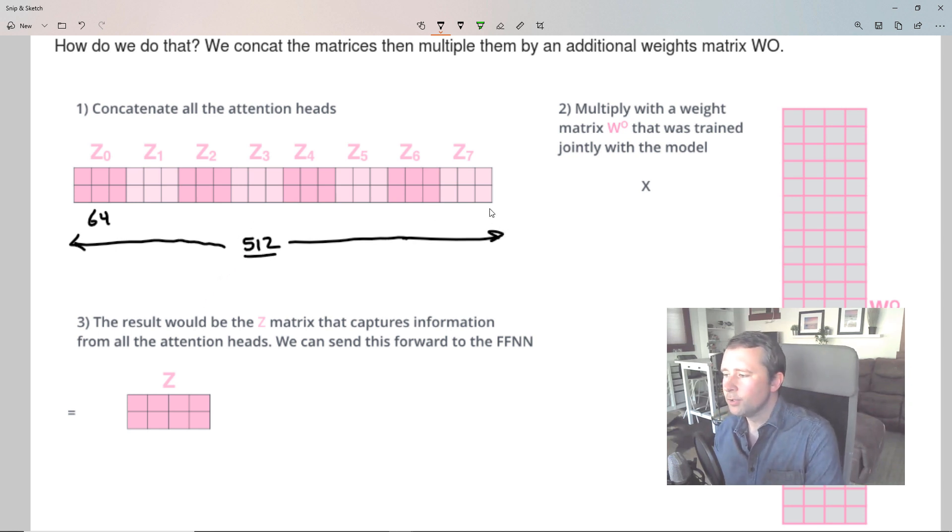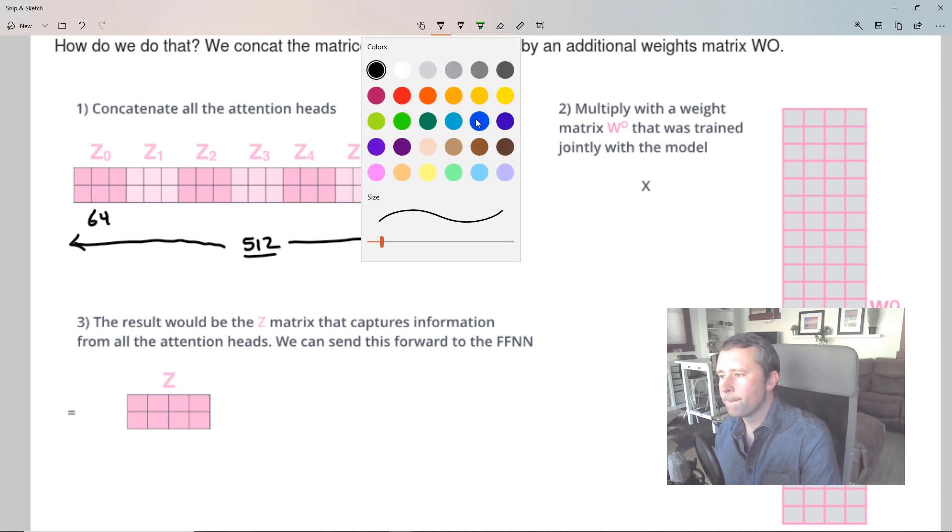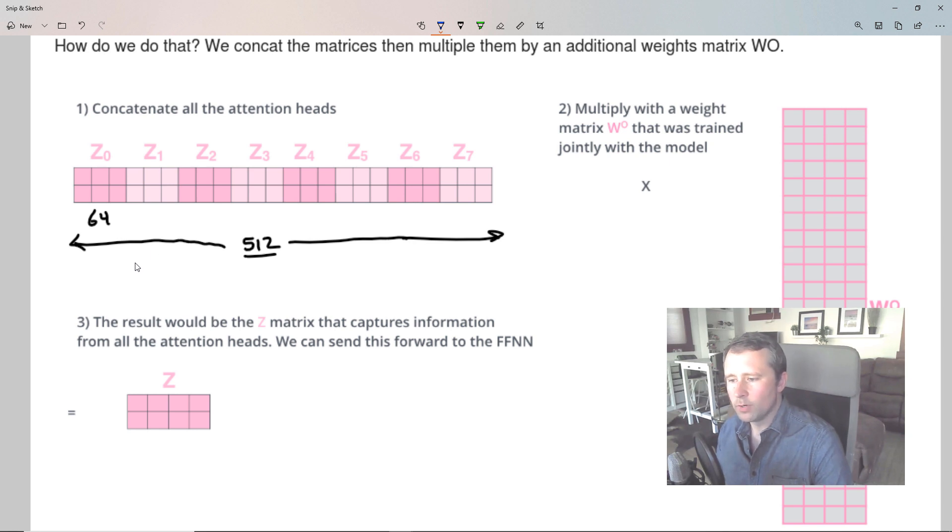So it turns out that because we used the size 64 in our query key value space, and we have eight heads, you can actually just concatenate all eight results. And you end up with one big two by 512 matrix. And that gets us what we need. That's the dimension that we need to get back to is 512. The model does include one more matrix here though. And I think there's kind of a couple of things here that this is about. So one is that if you were to, let's say, instead of using the size, the dimension 64, let's say you used 128.